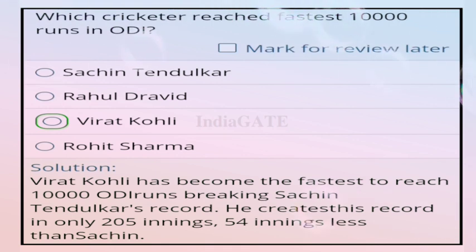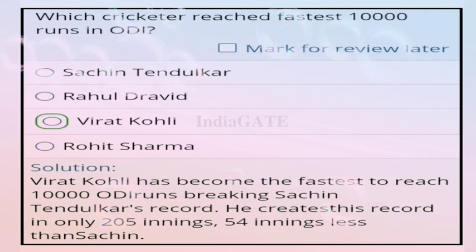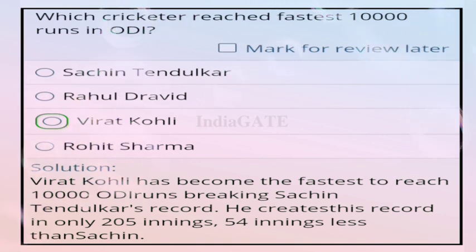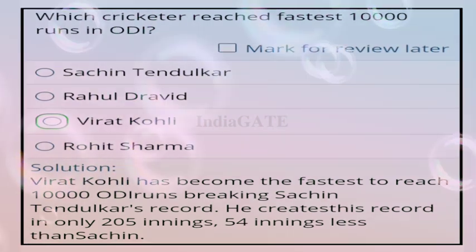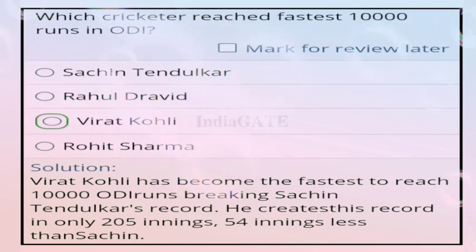Question 85: which cricketer reached the fastest 10,000 runs in ODI? Correct answer is option C, Virat Kohli. Virat Kohli became the fastest to reach 10,000 ODI runs, breaking Sachin Tendulkar's record, achieving it in only 205 innings — 54 innings fewer than Sachin.